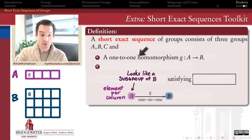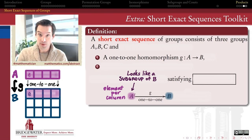And if there is a one-to-one homomorphism from A to B, that means that the image of A will be a subgroup of B.